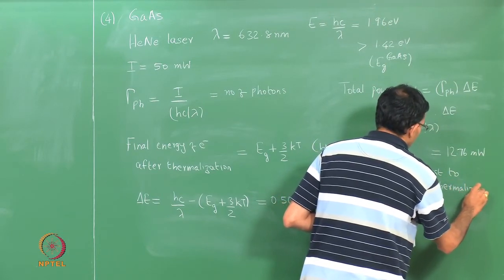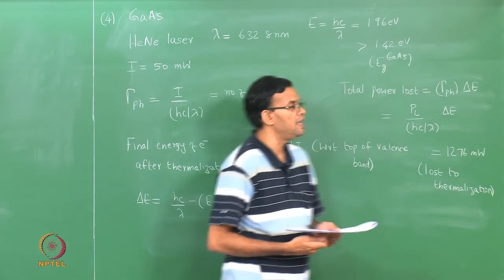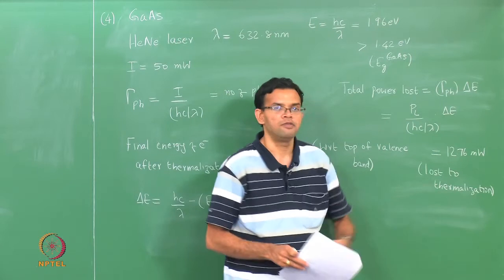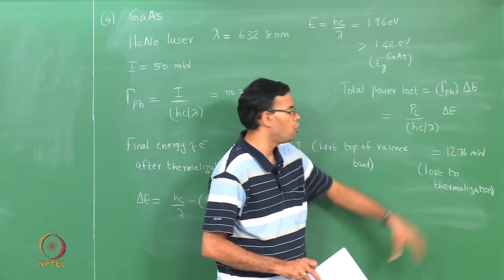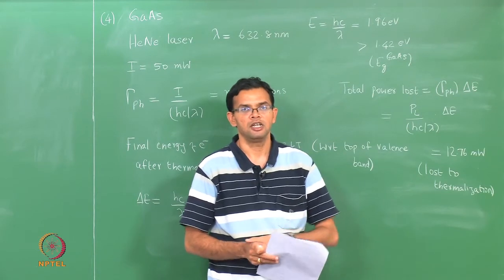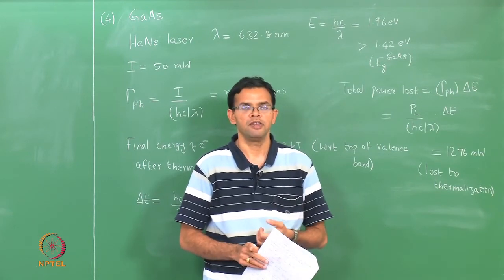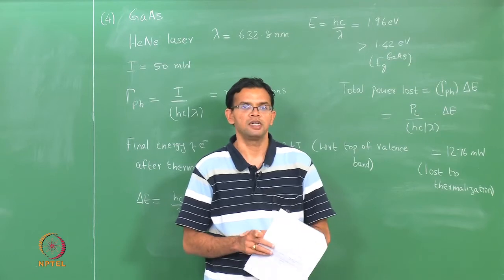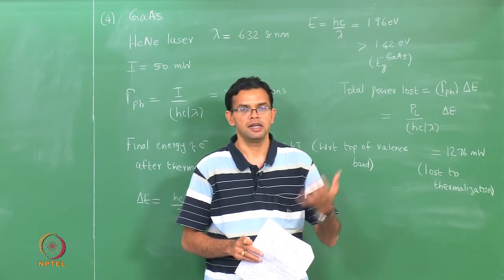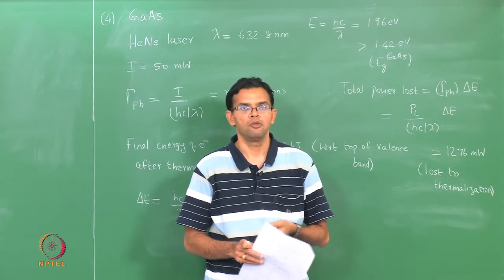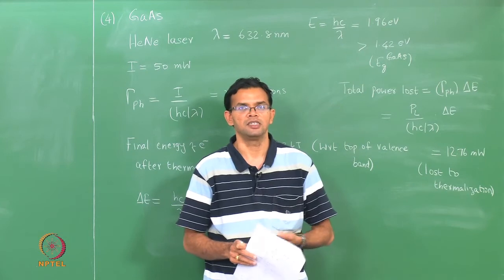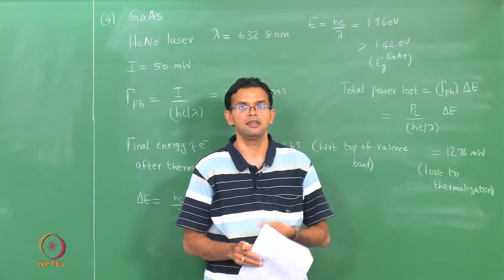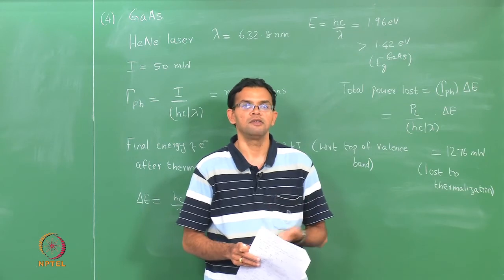If you increase the energy of incident light — instead of He-Ne at 1.96 eV you use a higher energy source — the value of Δe will be higher, meaning more power is lost to thermalization. This is important when deciding what incident radiation to use to generate electron-hole pairs. If there is a large mismatch between the incident energy and the band gap of the material, most of the energy will be lost as thermalization heat, increasing device temperature and reducing efficiency.